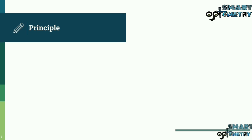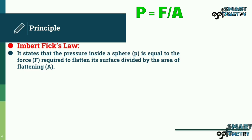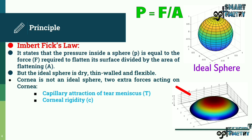The Goldman Applanation Tonometer is based on the Imbert-Fick law, which states that the pressure inside a sphere is equal to the force required to flatten its surface divided by the area of flattening — that is, P equals F divided by A. However, the ideal sphere is dry, thin-walled, and flexible, and the cornea is not an ideal sphere.